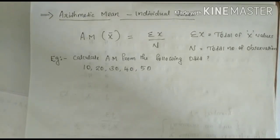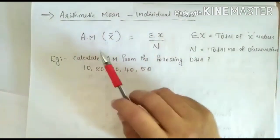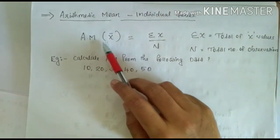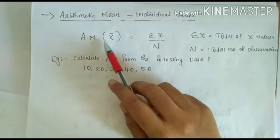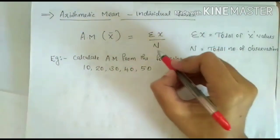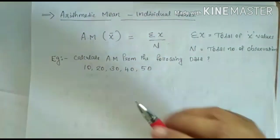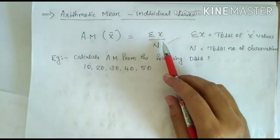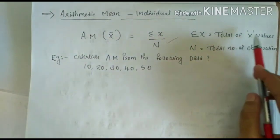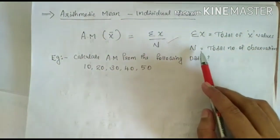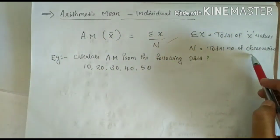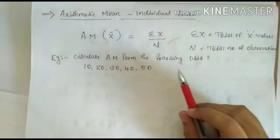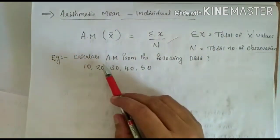Now, how to calculate arithmetic mean in individual series. In the case of individual series, arithmetic mean — or X-bar — is equal to sigma X divided by N. Here, sigma X is the total of the X values and N is the total number of observations.